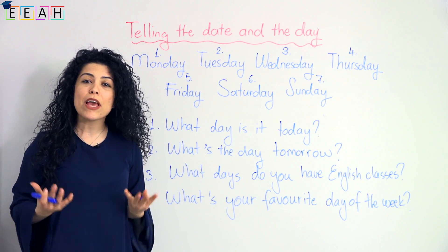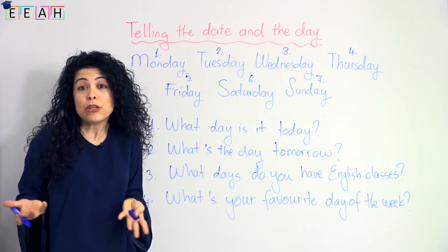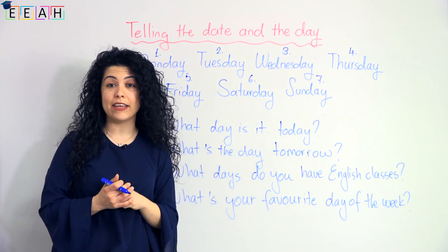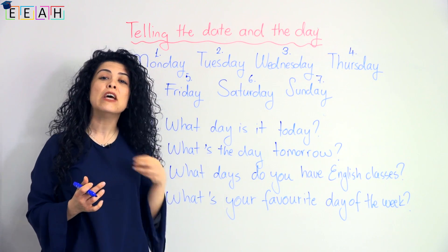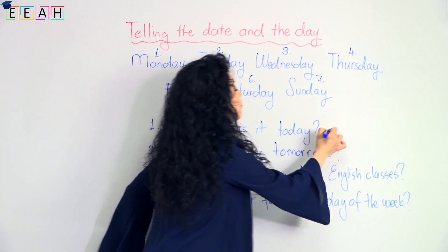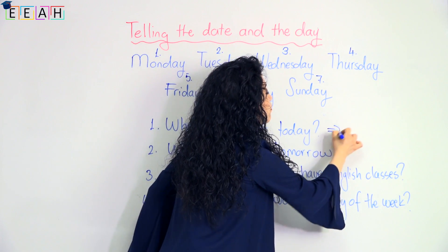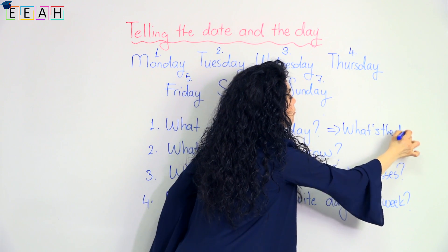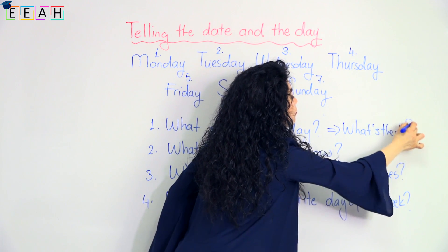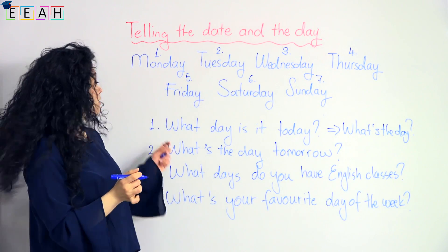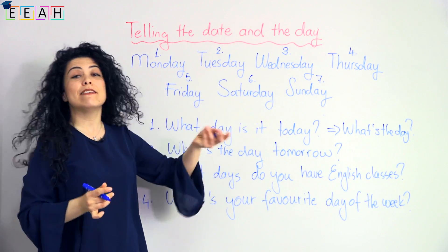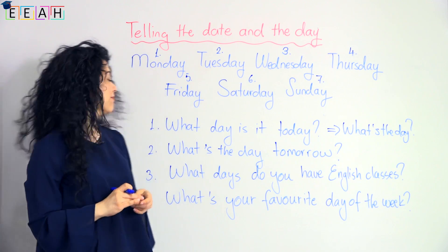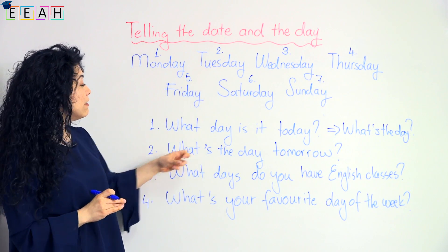Sunday. Let's repeat one more time: Monday, Tuesday, Wednesday, Thursday, Friday, Saturday, and Sunday. What day is it today? That's how we ask the day when we don't know. You can also say: What's the day?